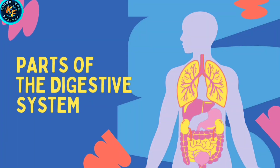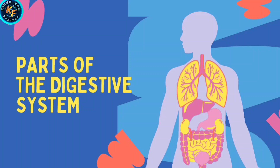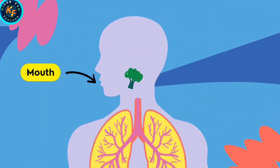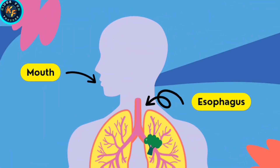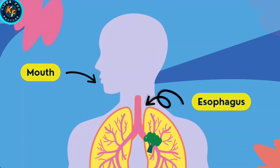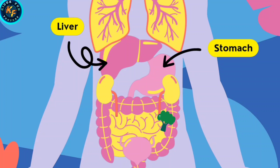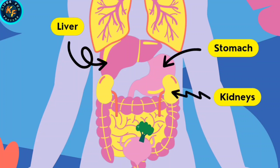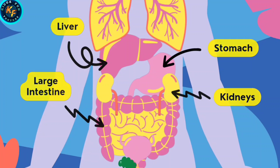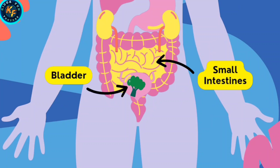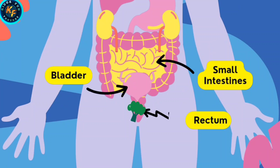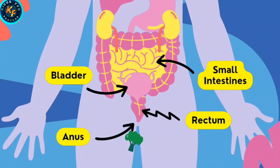Let's revise parts of the digestive system. Mouth, Esophagus, Liver, Stomach, Kidneys, Large Intestine, Small Intestine, Bladder, Rectum.